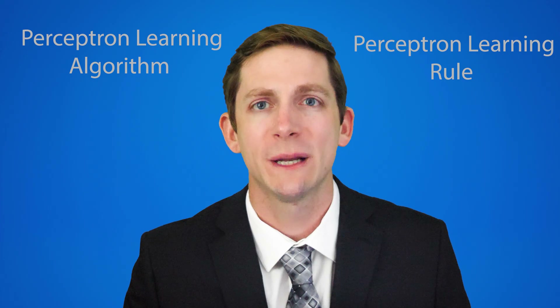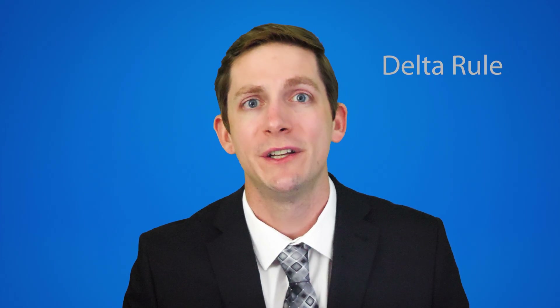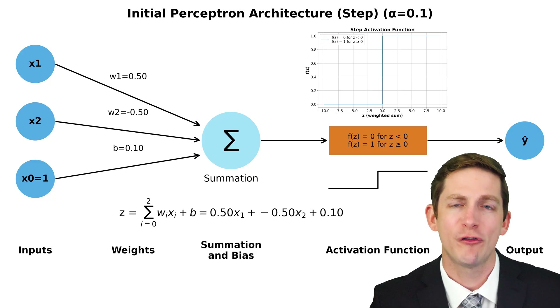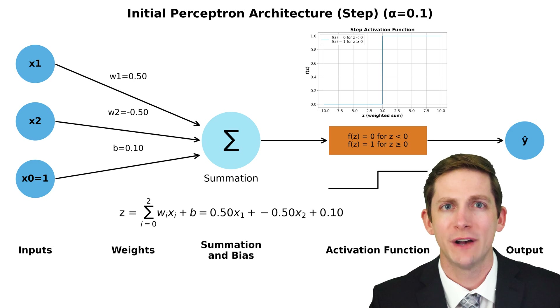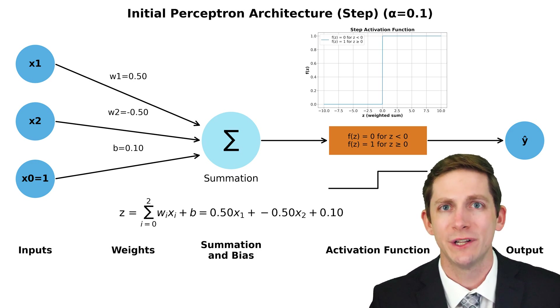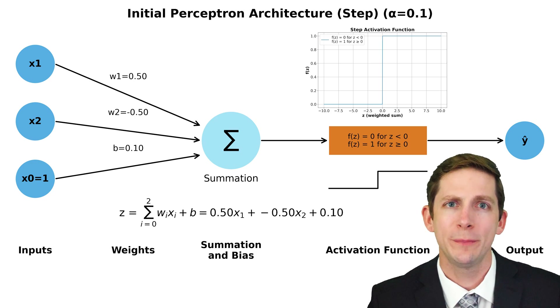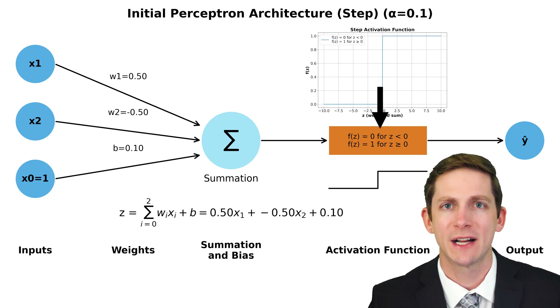For a single layer perceptron to learn, we do not need to use backpropagation. The learning method is called the perceptron learning algorithm, or perceptron learning rule, or just the delta rule. Step 1: randomly set the weights and bias. Step 2: for each set of training input values, a forward pass is performed to get a predicted output, denoted as y-hat. A forward pass is when the perceptron computes the weighted sum of inputs and passes it through the activation function to get a predicted output.